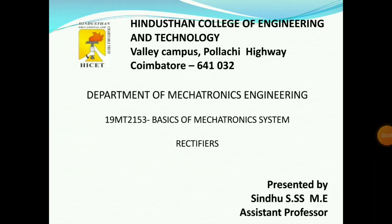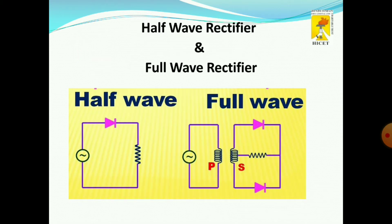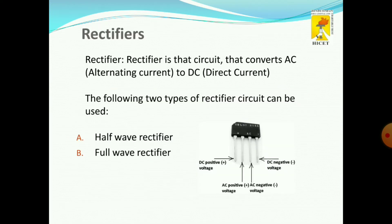Welcome. I am Sindhu from Eccatronics Engineering. Now we will see about rectifiers. What is a rectifier? It converts alternating current to DC current. A PN junction diode allows electric current only in forward bias condition and blocks electric current in reverse bias condition. This unique property of the diode allows it to act like a rectifier.